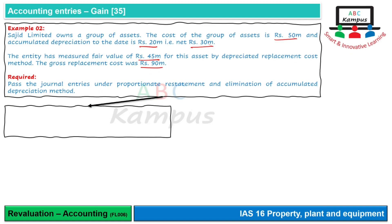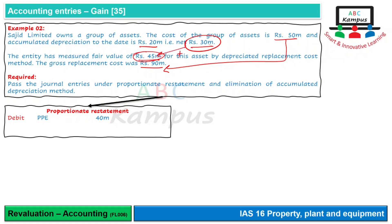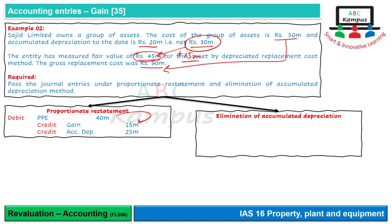Proportionate restatement में: 50 million से 90 million पर आना है, तो 40 million से property plant equipment debit। Asset 30 million से 45 million का हुआ, gain 15 million credit। Accumulated depreciation difference 40 और 15 का = 25 million record होगी। Elimination method में: accumulated depreciation 20 million debit, asset credit। फिर gain 15 million credit, asset debit।